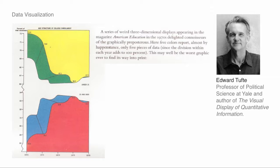This is an example — some of Tufte's words: 'A series of weird three-dimensional displays appeared in the magazine American Education in the 70s, delighting connoisseurs of the graphically preposterous. Here five colors report, almost by happenstance, only five pieces of data.' Since the top and bottom are just mirror images of each other, there's absolutely no additional data — you could cut this in half and not lose any data. He says this may well be the worst graphic ever to find its way into print. You could summarize this with just two numbers — that number in 1973 and that number in 1976. So this is truly terrible. Don't do this.